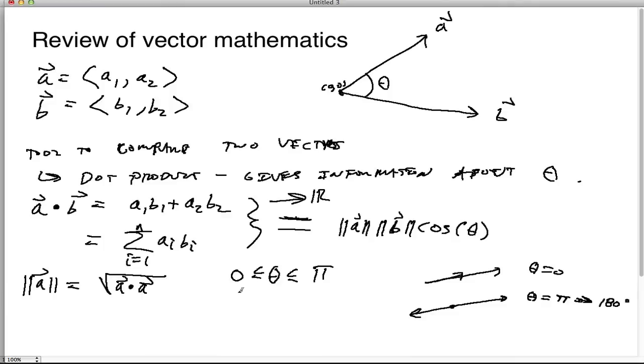Alright. So that's the idea is that this dot product can tell you how much of one vector is going in the direction of another vector. Alright. So it tells you kind of motion with respect to some direction of interest.